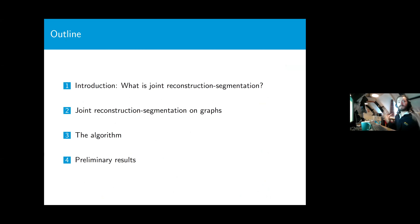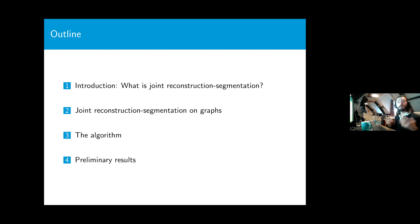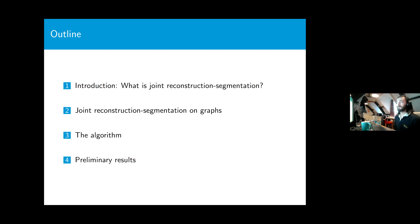So the basic structure of this talk: we'll start off talking about what image segmentation is and what joint reconstruction segmentation is, then how we can use graph methods to perform joint reconstruction segmentation, then particularly the algorithm we have devised for doing joint reconstruction segmentation on graphs, and finally some preliminary results using this method.